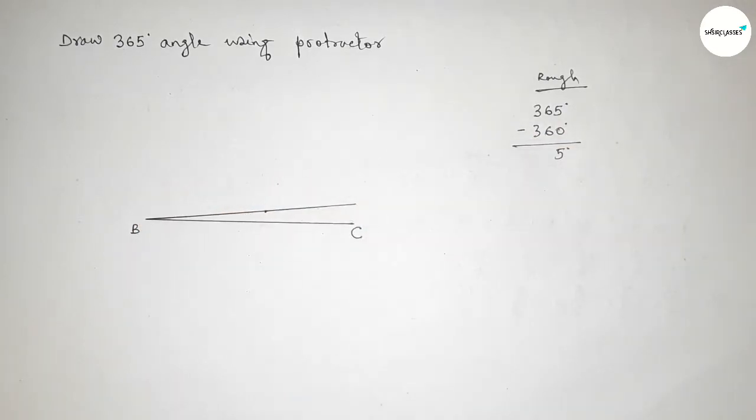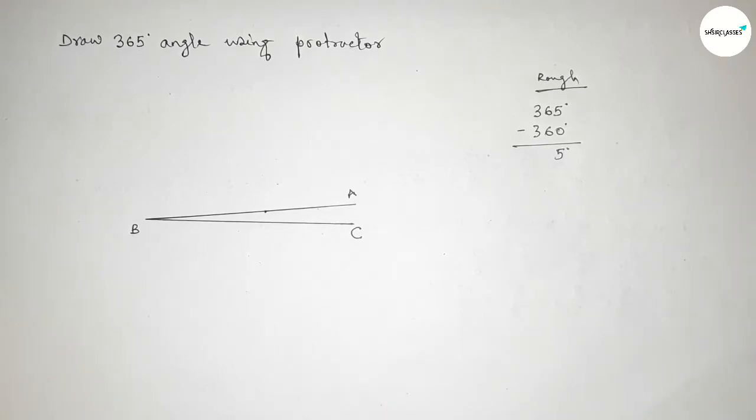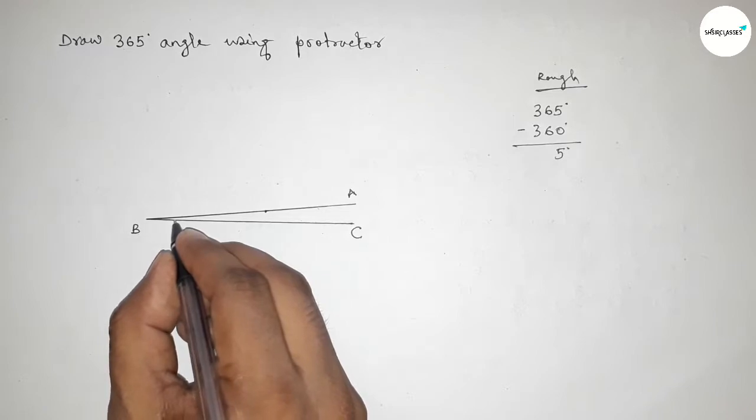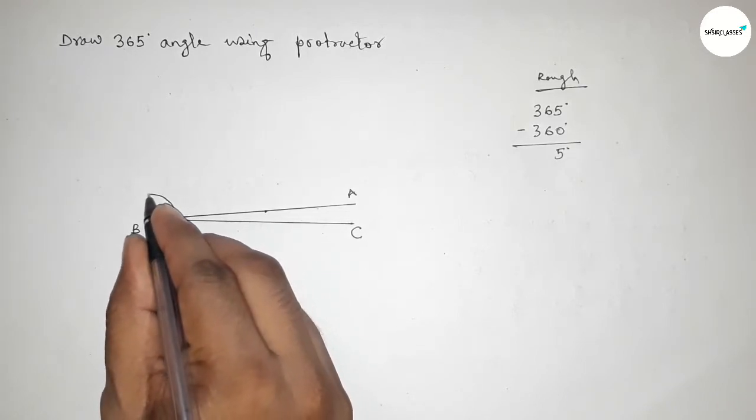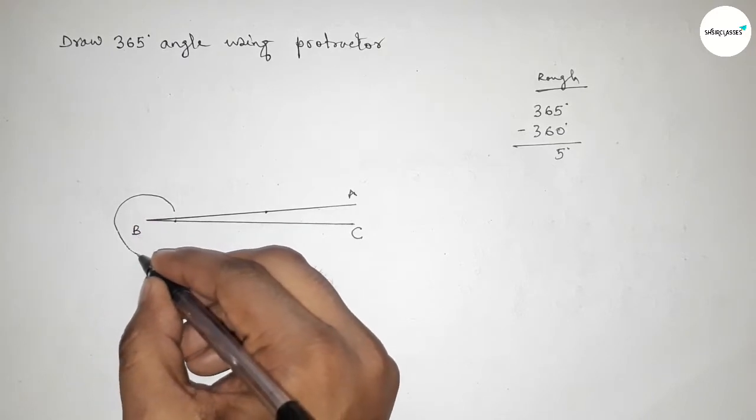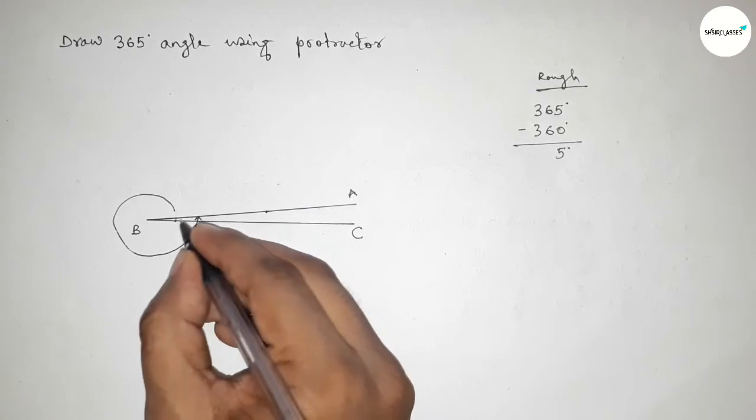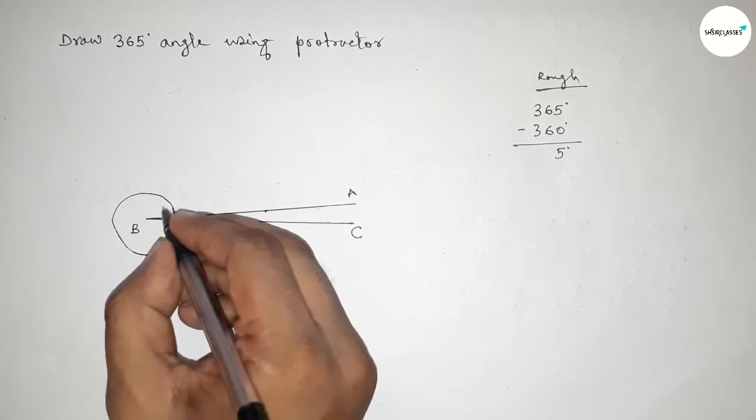Next we have to draw an arc from the line BC. So first drawing here an arc by this way from the point BC to the line AB. So first drawing here an arc and from this line to this line.